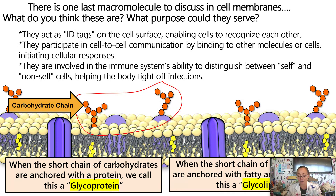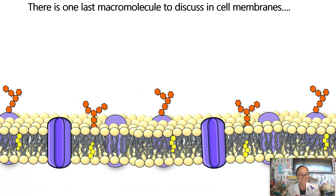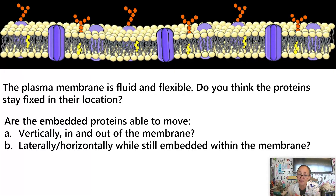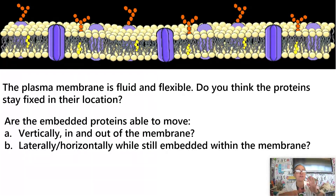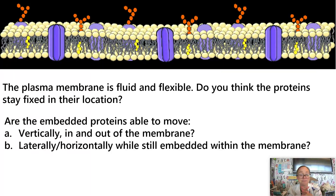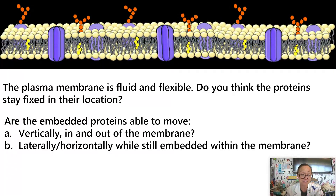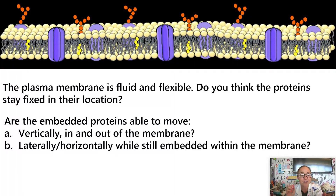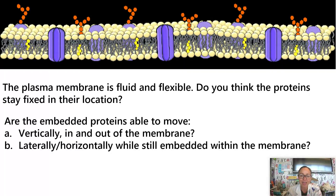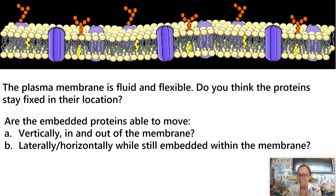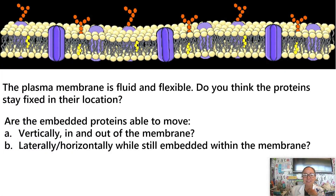When we look at the cell membrane, we call it a fluid mosaic model because it is fluid and flexible — proteins can move around. It's a mosaic because it's made of many different types of macromolecules: lipids, proteins, and carbohydrates — all the macromolecules except DNA. That is a summary of the structure of plasma membranes.